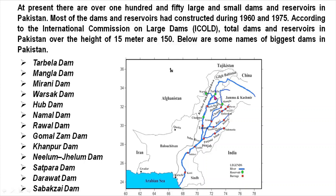It is worth noting that most of the dams in Pakistan are constructed in the upper plains, mostly in Punjab or KPK. There are also smaller dams in Balochistan and Sindh, but the major dams are in the upper plains — Punjab and KPK.